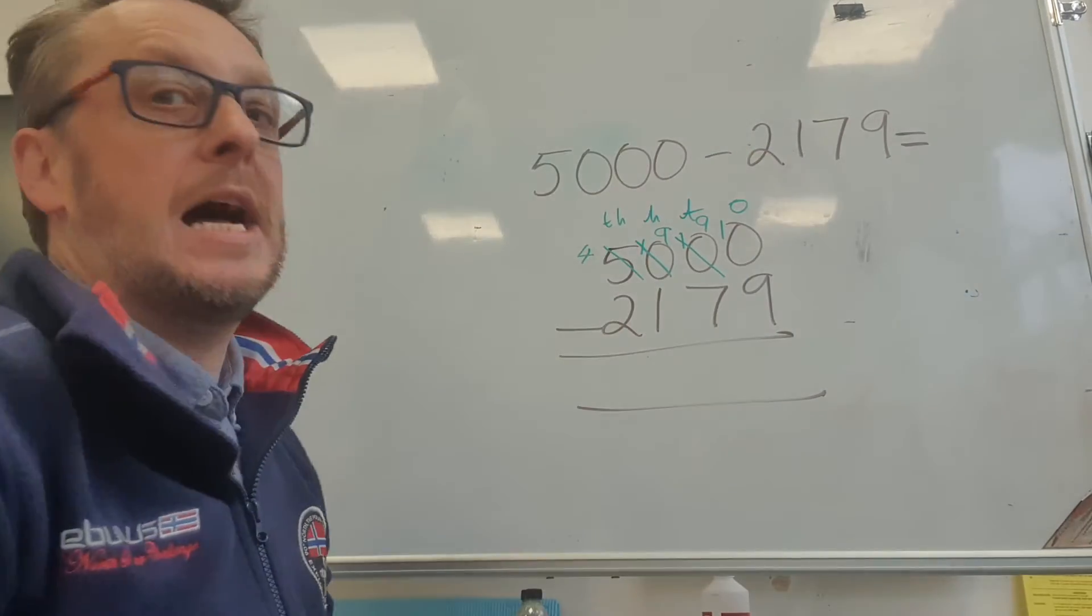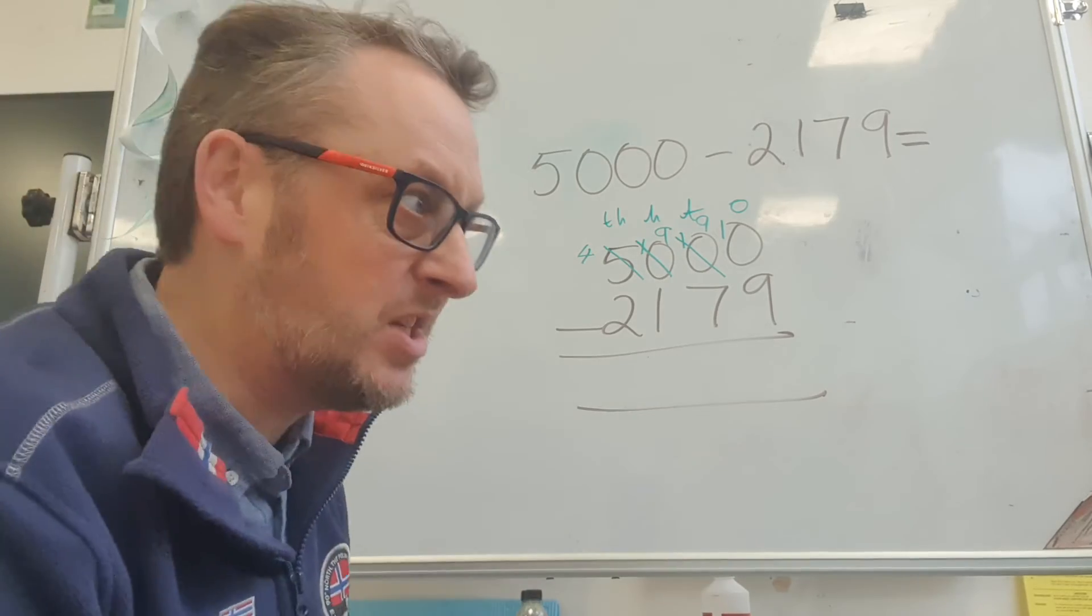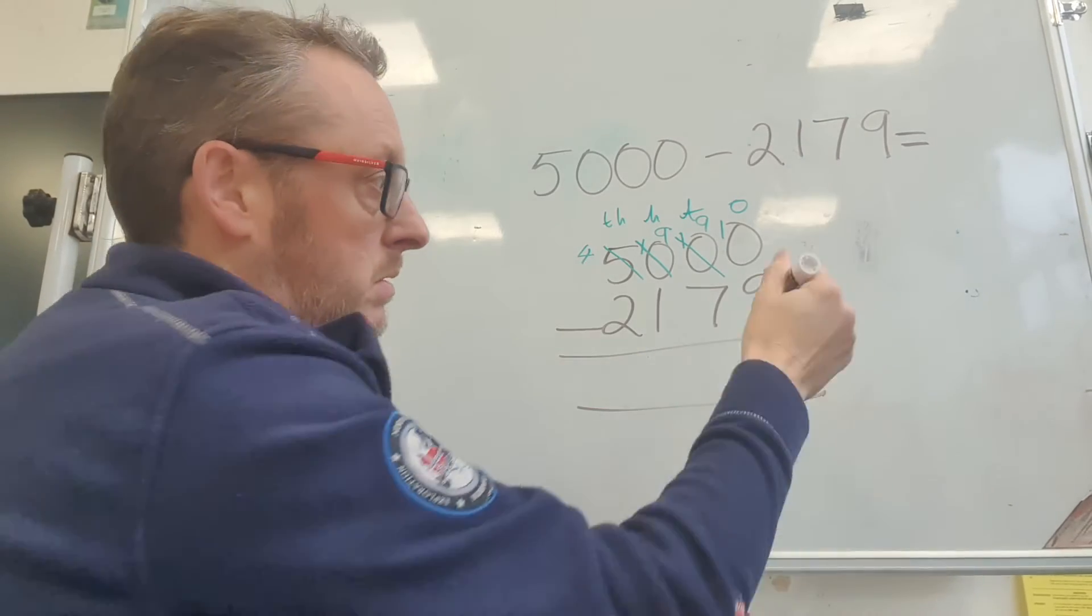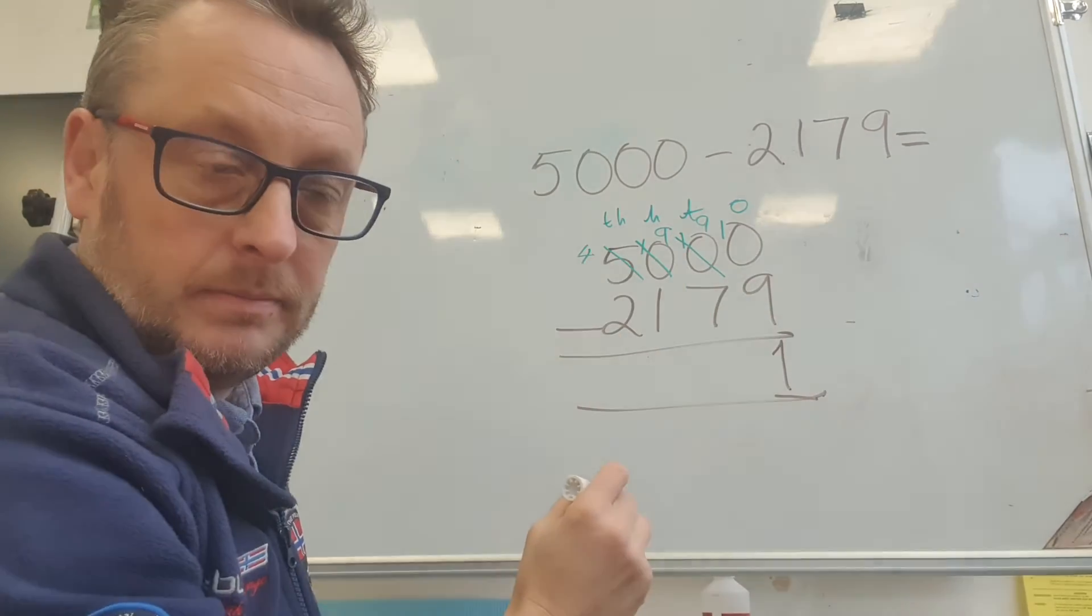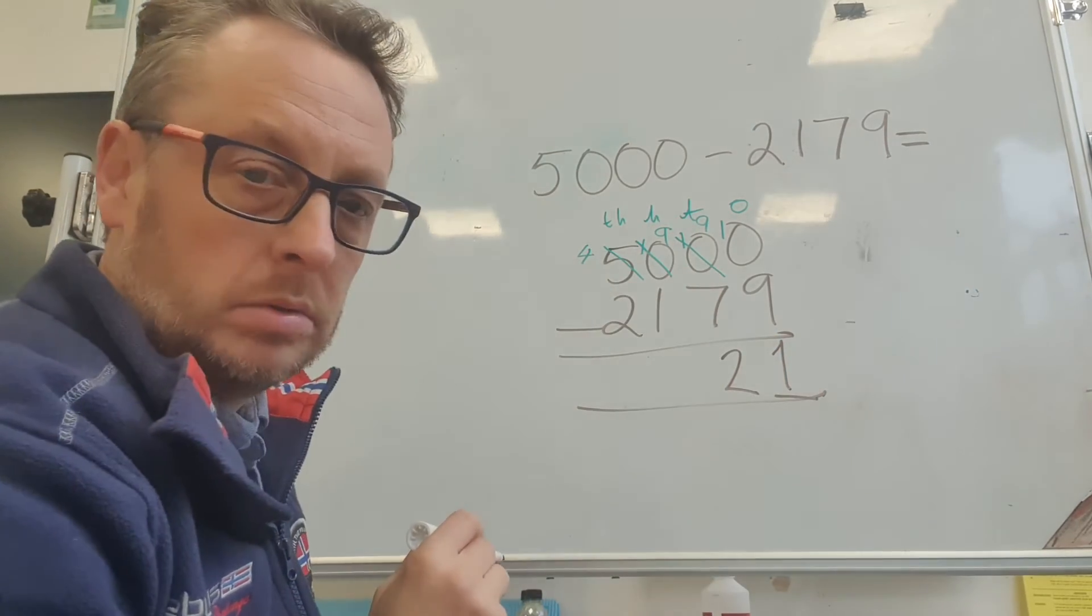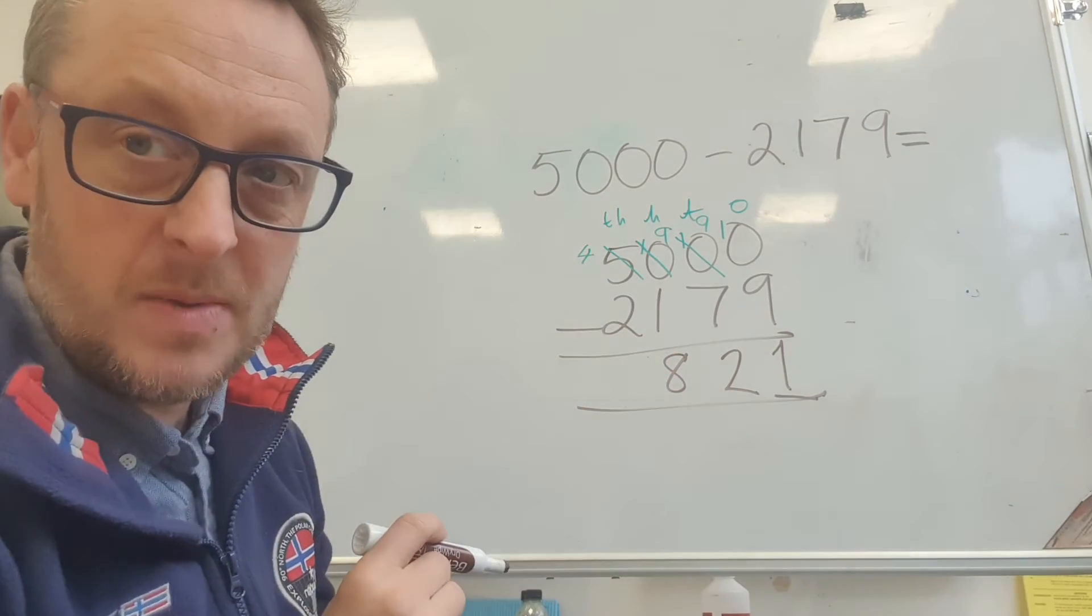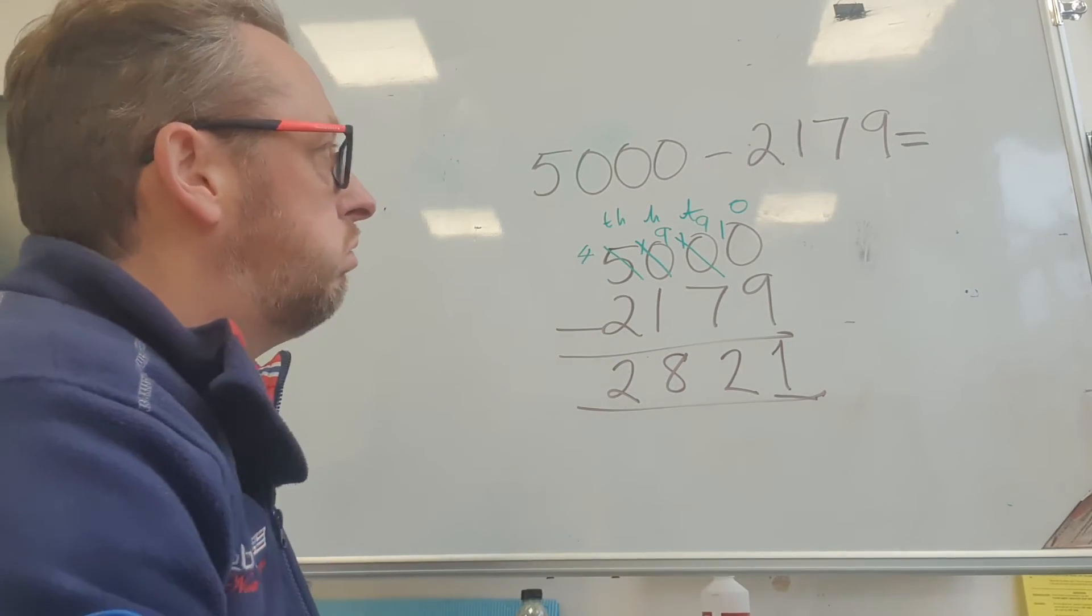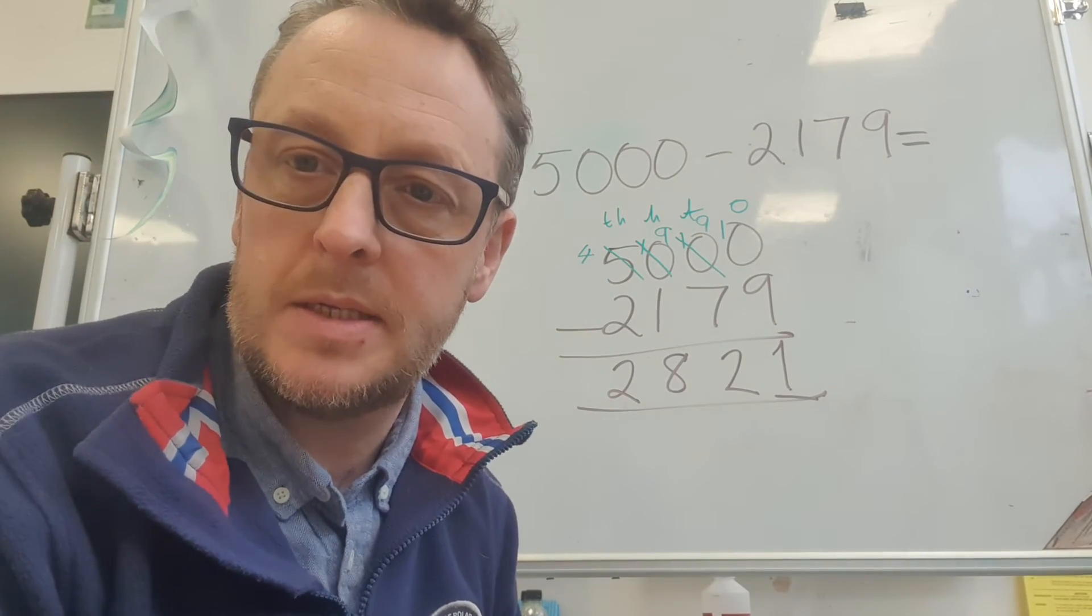So now I can do this calculation, but can you see how long it took? It took ages. Ten takeaway nine is one. Nine takeaway seven is two. Nine takeaway one is eight. And four takeaway two is two. Oh, took ages, didn't it? Surely there must be a simpler way to do this. Can you have a think?